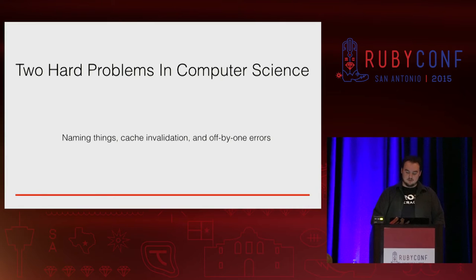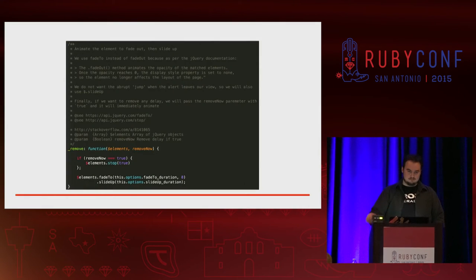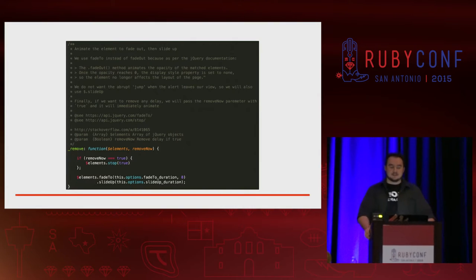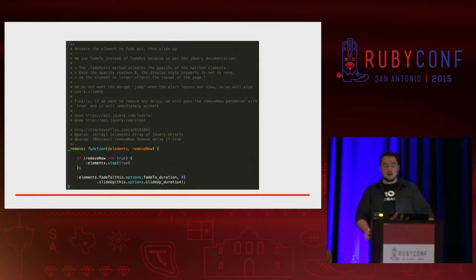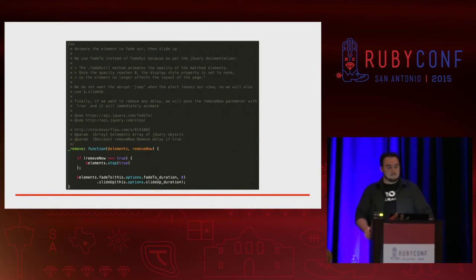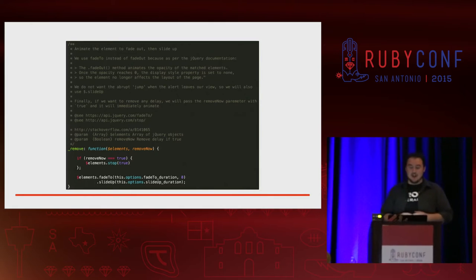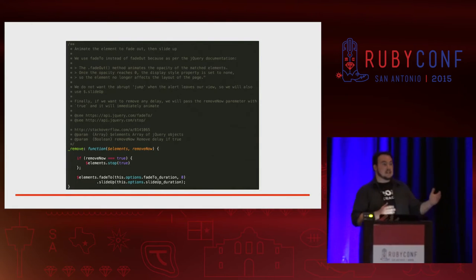I want to briefly show something that I did about a year and a half ago. Don't worry about the details — this is some jQuery going on here. The thing to focus on is the fact that the comment block is two, two and a half times longer than the code it represents. It doesn't really clarify what's going on. In fact, if you know any jQuery API, it's pretty obvious what's going on. And the method name doesn't even describe what's happening.